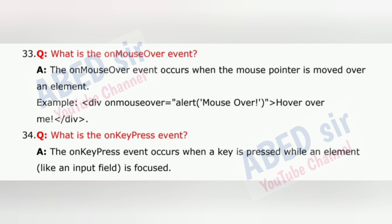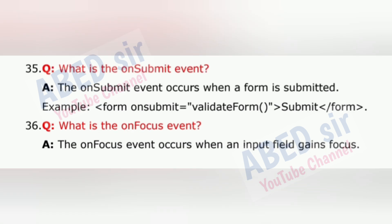Question 34: What is the onkeypress event? The onkeypress event occurs when a key is pressed while an element, like an input field, is focused.